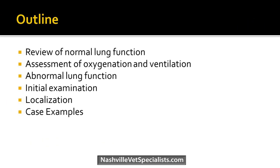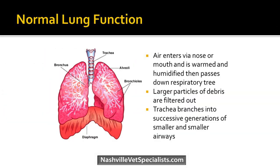This is just an outline of what we're going to talk about. We'll go over briefly a review of normal lung function, then talk about how to assess oxygenation and ventilation in our patients, then go into abnormal lung function, initial examinations of a respiratory distress patient, how to localize where the problem is, and then we'll do case examples.